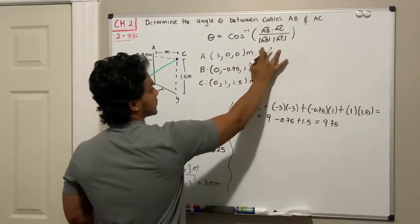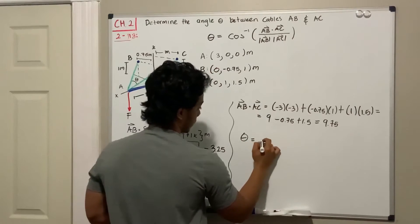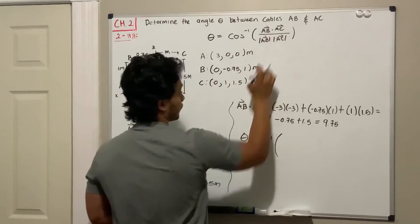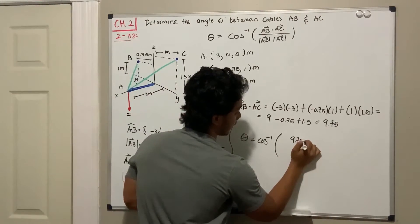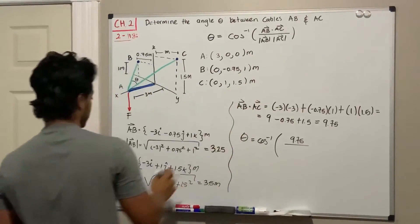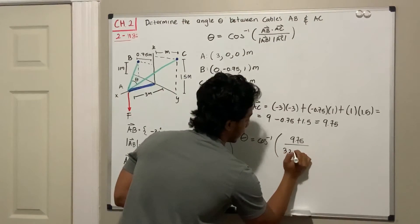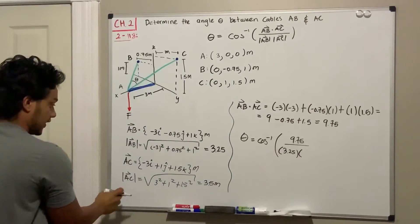and the two magnitudes. So let's find theta. Theta is equal to the inverse cosine of the dot product on top, so 9.75, all divided by the multiplication of the two magnitudes: magnitude of AB, 3.25, multiplied by the magnitude of